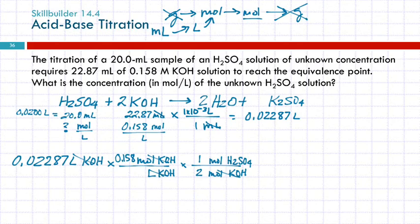0.02287 times 0.158 divided by 2. And it's a small number, but that's okay. I should have three significant figures in my final answer. So, 1, 8, 0. And keep two extras to avoid rounding errors. And the unit there is moles of H2SO4.